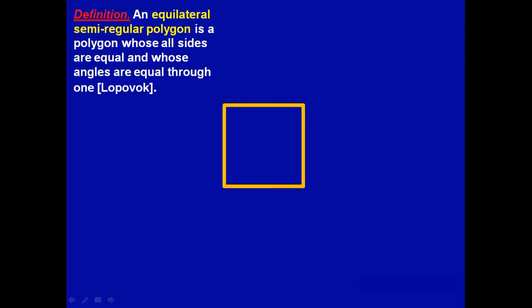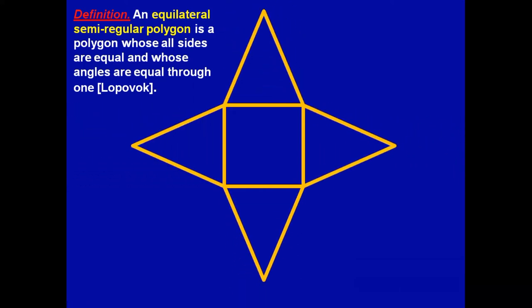During the work we used different geometric objects. Here are their definitions. First, an equilateral semi-regular polygon. Imagine that we have a square and add isosceles triangles to each side. Then the polygon will have equal sides and its angles will be equal through one. So, an equilateral semi-regular polygon is a polygon whose all sides are equal and whose angles are equal through one.